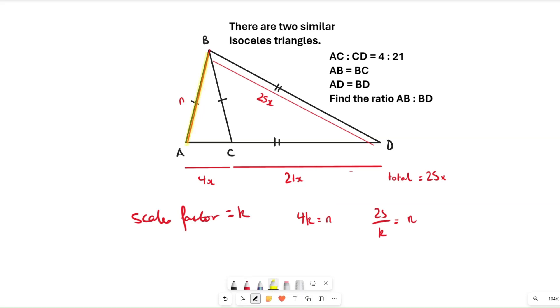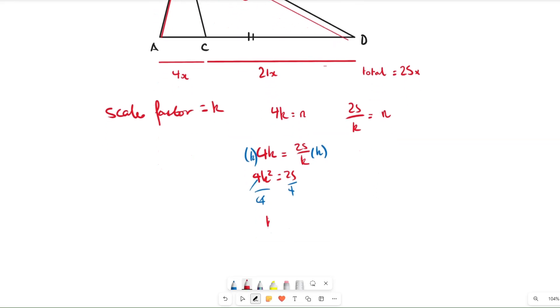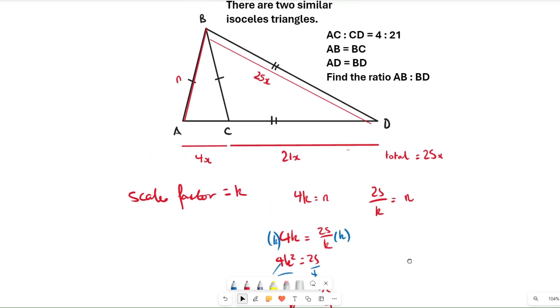Since we have two equations equal to n, we can equate them. So we can say that 4k equals 25 over k. If we multiply both sides by k, we get 4k squared equals 25. Divide by 4 and we get k squared equals 25 over 4. If we square root it, we get 5 over 2. We don't have the negative because we're dealing with a scale factor.